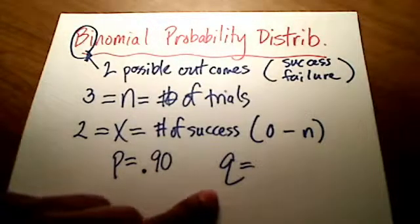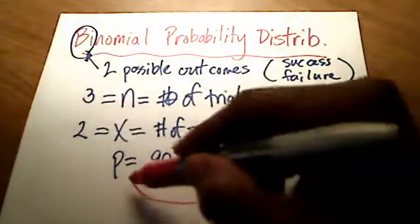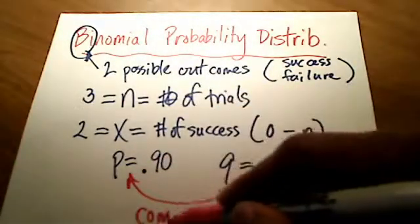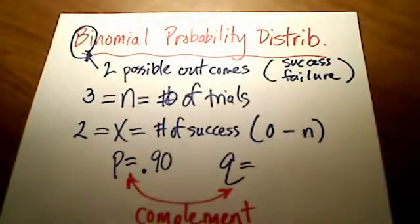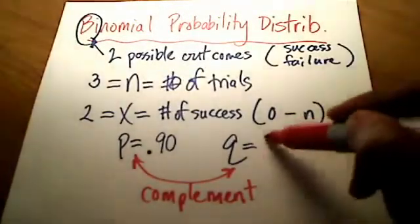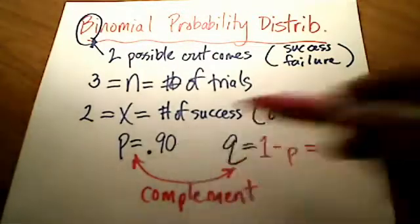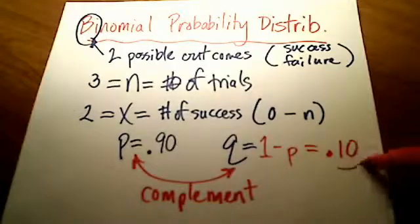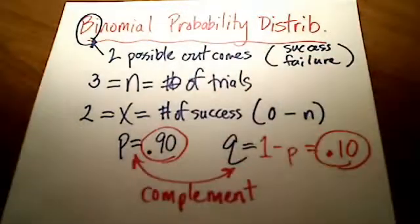Well, what is q? q is the complement of p. q and p are complements of each other. So if you know the probability of success is 0.9, then the complement is 1 minus that. The complement is 1 minus p. Or in this case, 1 minus 0.9 is 0.10. So he stands a 10% chance of missing and a 90% chance of making it.